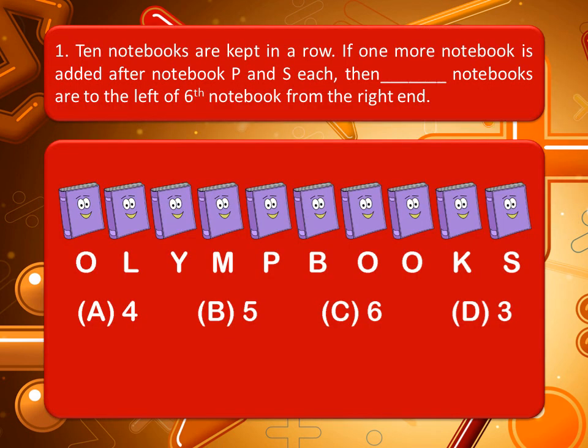Our first question is: 10 books are kept in a row. If one more book is added after notebook P and S each, then how many notebooks are to the left of the sixth notebook from the right end? Look at the books and the options very carefully. You can pause the video to think about the correct answer. The correct answer is six.